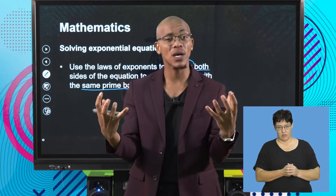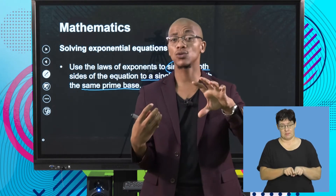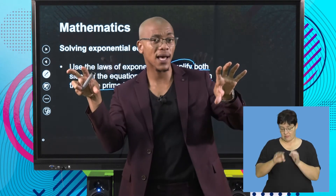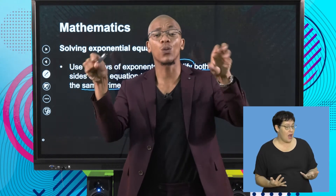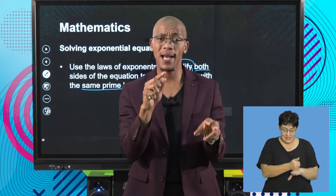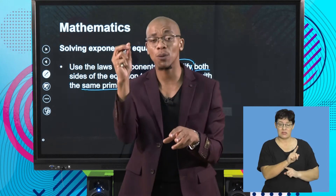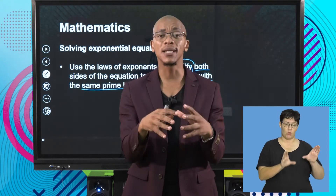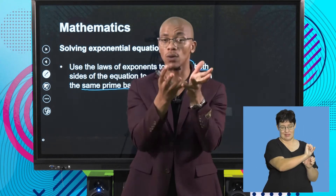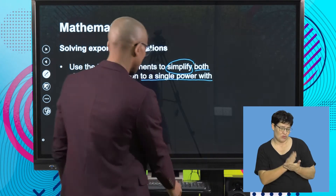This step says: simplify one side, simplify the other side, such that you have one power on each side with the same base. Remember, the word 'power' in this context means the whole base with its own exponent — the whole thing is called a power. Please make sure you do understand that.